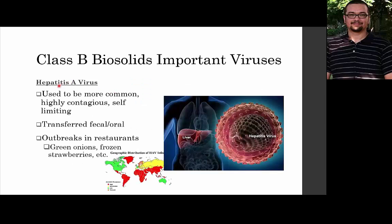Hepatitis A — we talked about Hepatitis E earlier; this is Hepatitis A, the more human-adapted virus. It is extremely contagious and has been known to cause outbreaks in restaurants associated with green onions and frozen strawberries. There is a worldwide distribution, though levels in the US have gone down year upon year for the last 10 years or so as a result of better sanitation, food quality, and food safety measures — but Hepatitis A remains an extremely contagious virus.